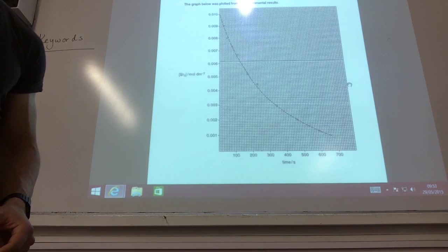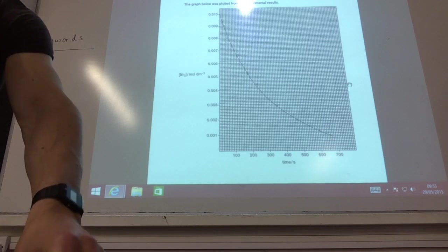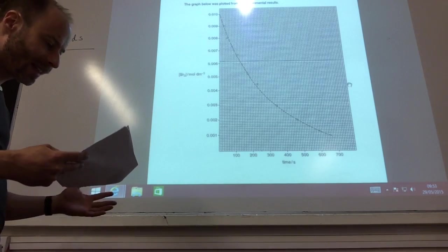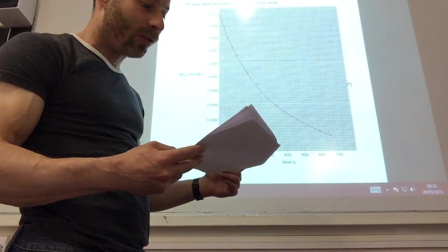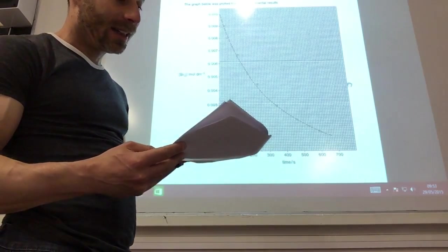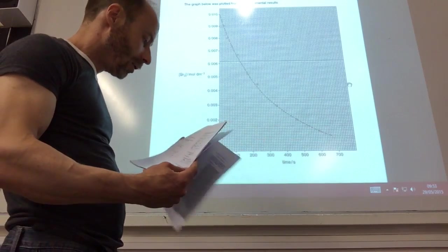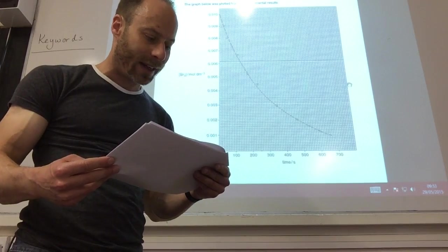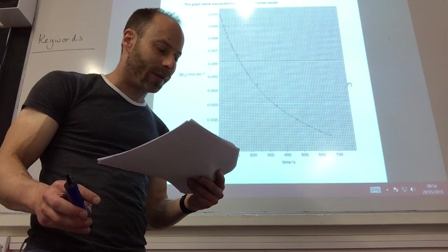Question three is looking at methanoic acid reacting with bromine. We're carrying on with rates of reaction here. Use a large excess of methanoic acid to ensure its concentration was effectively constant throughout. During this reaction, the bromine was used up and the orange colour became less intense. We measured the intensity of the orange colour and plotted the graph below. In this initial investigation, a large excess of methanoic acid was used, and therefore the order with respect to methanoic acid was effectively zero.